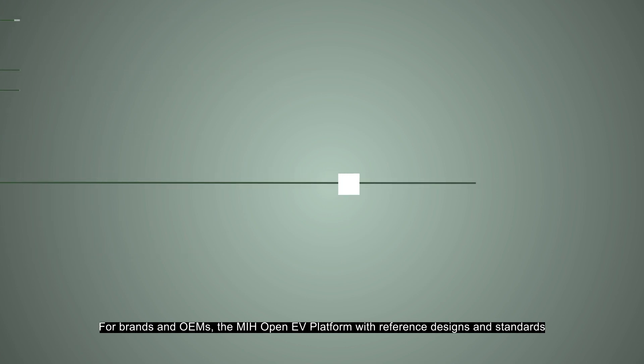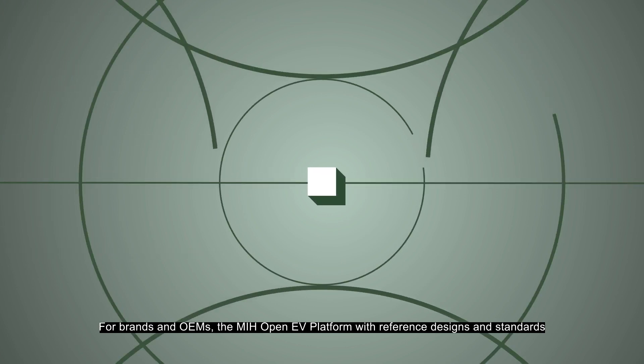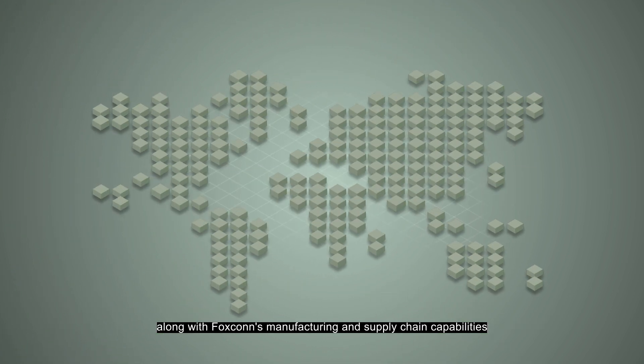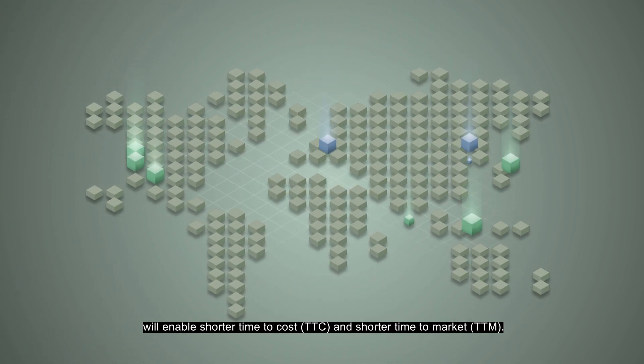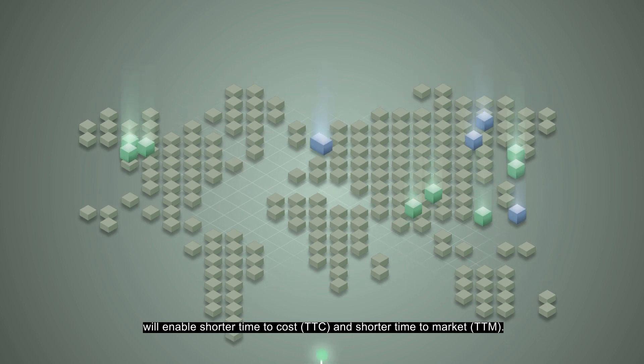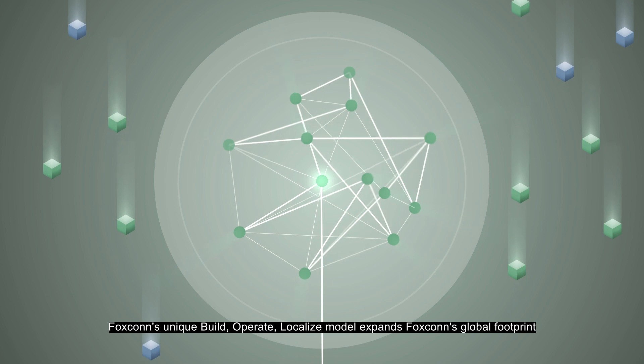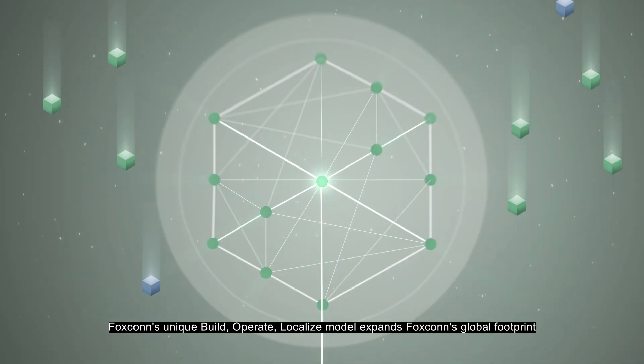For brands and OEMs, the MIH OpenEV platform, with reference designs and standards, along with Foxconn's manufacturing and supply chain capabilities, will enable shorter time to cost and shorter time to market. Foxconn's unique Build-Operate-Localize model expands Foxconn's global footprint.